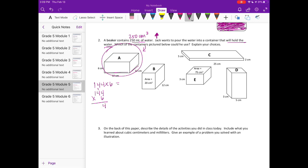6 times 4 is 24, carry the 2. 6 times 4 is 24 plus 2 is 26, and 6 times 1 is 6 plus 2 is 8. So it's going to fit 864 centimeters cubed, and so it will fit.